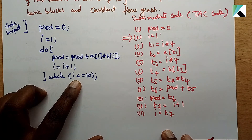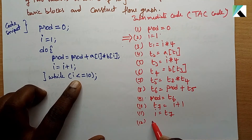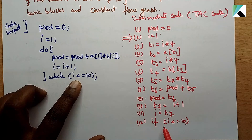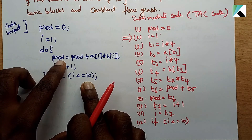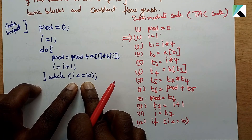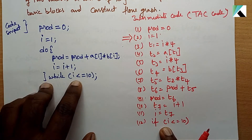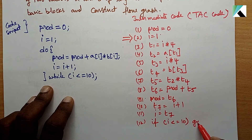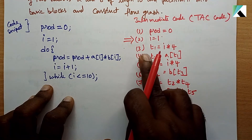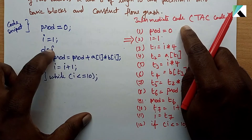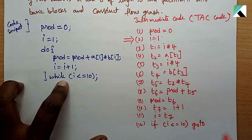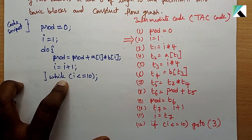Statement 12: if i <= 10, go to statement 3 (the loop condition). This completes the intermediate code generation. Once the intermediate code is ready, we divide it into basic blocks.